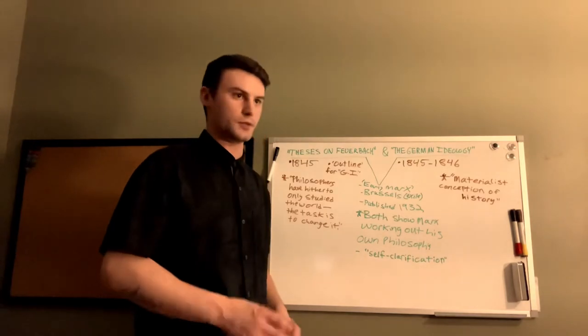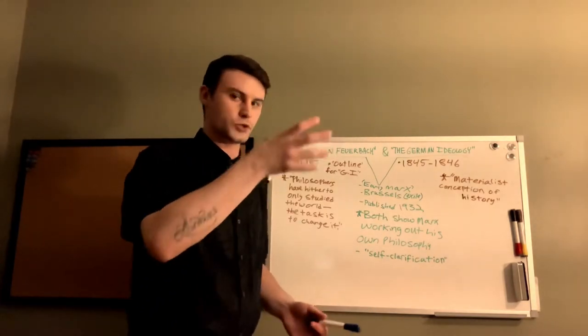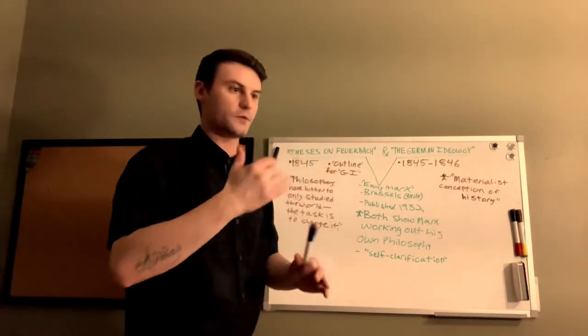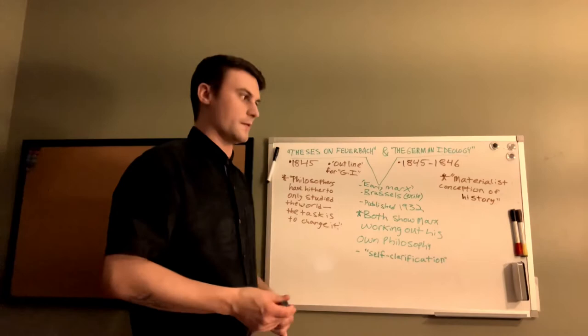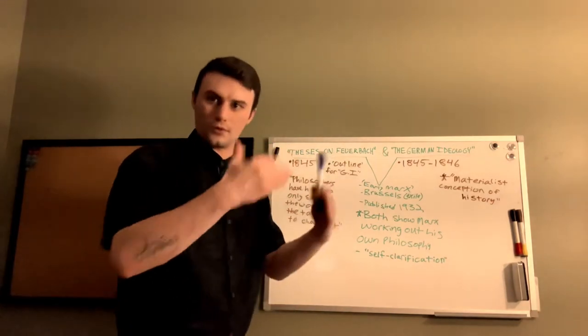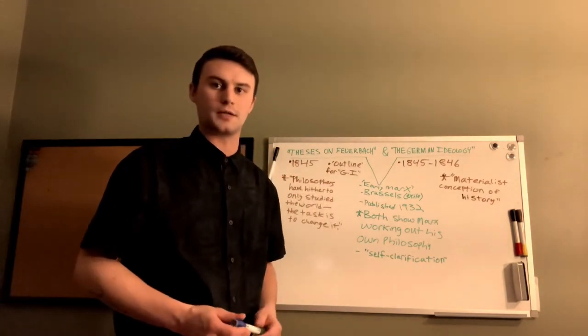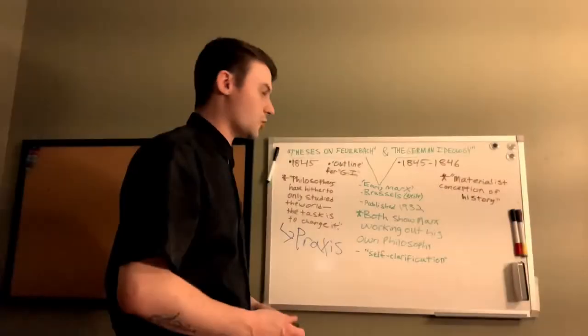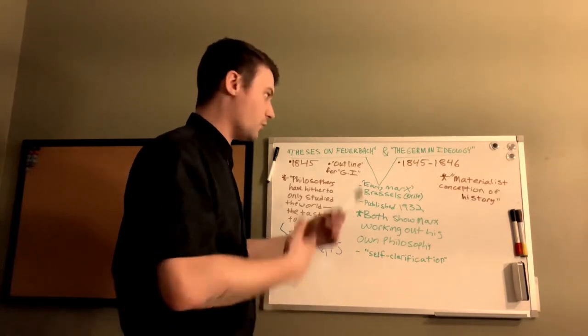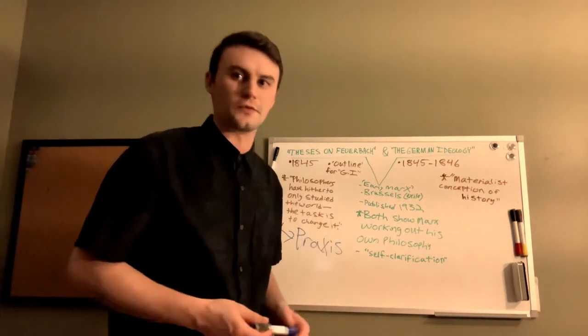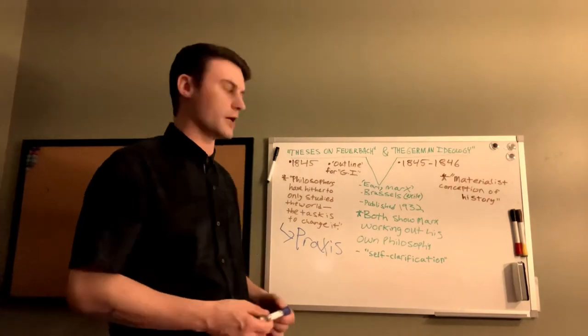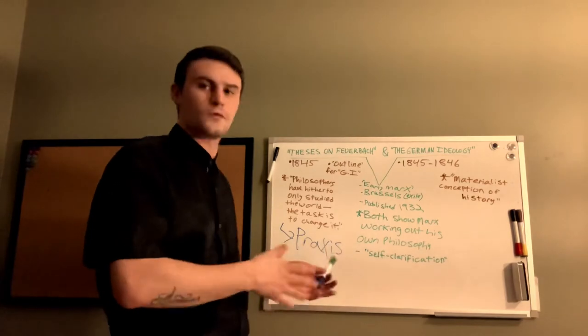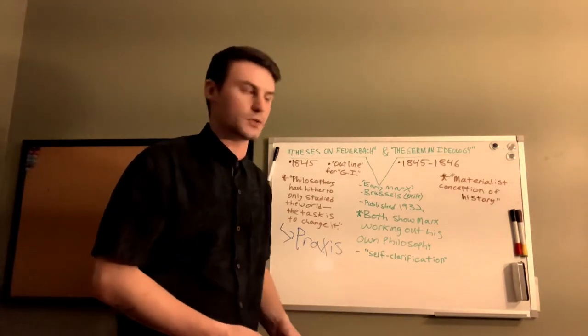The Theses on Feuerbach is basically 11 short paragraphs in varying lengths. Some of them are long paragraphs, some of them are only a sentence or two, and they serve as sort of bullet points for some ideas that Marx was working on at the time that would later resurface in the German Ideology. The German Ideology, which was a longer work, was written between 1845 and 1846. He began working on it in the fall of 1845 and finished it roughly a year after he had written the Theses on Feuerbach.